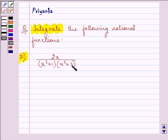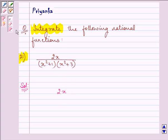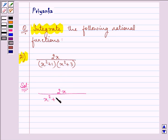Now if you observe in this question, the numerator, that is 2x, will be a derivative of x square. So 2x dx will be equal to dy.